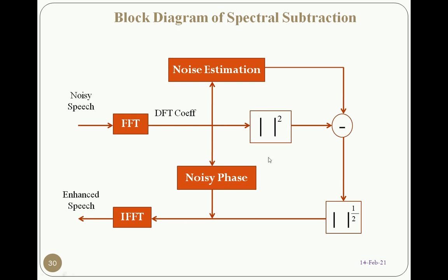What we are doing here is, after getting the DFT coefficients, we are taking the modulus square, which is nothing but the power. From noise estimation, we are getting the noise power, so we are subtracting the noise power from the noisy speech power to get only the speech power.